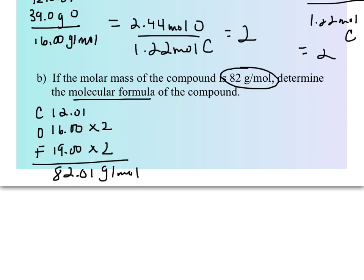When we add up all of the molar masses for CO2F2, we get 82.01 grams per mole. Now when we compare the molecular formula molar mass to the empirical formula molar mass, we see that they are the same. This means that the empirical and the molecular formulas are the same.